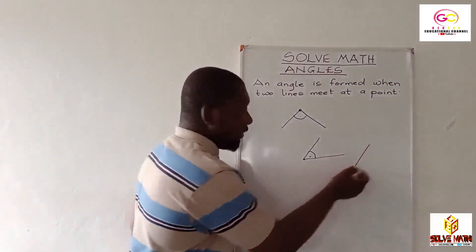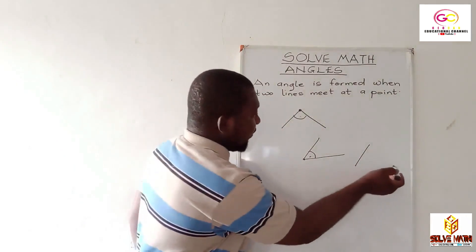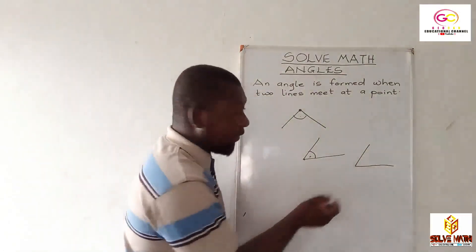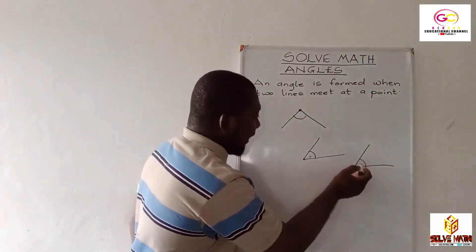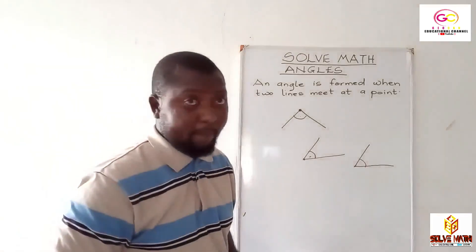So now, this line, this line meeting at this point, then an angle is formed here. Good.